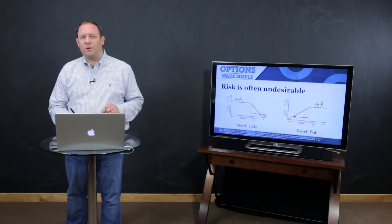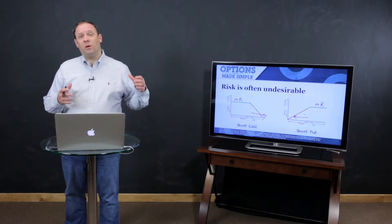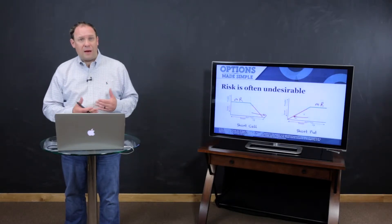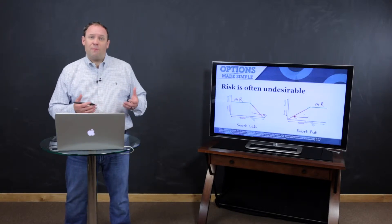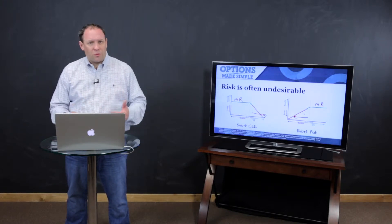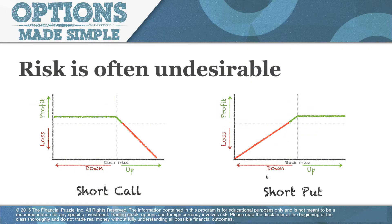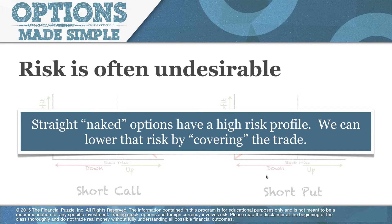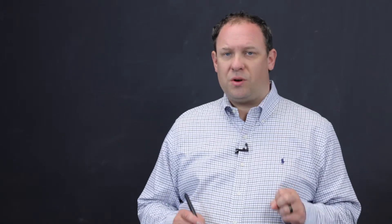Because of this risk profile, shorting options gets a bad name — a lot of people have a bad impression of it. What I want to start showing you is how we can limit that risk profile while still keeping the general benefit of making money in two out of three directions. We'll start building out different strategic uses from there. That high-risk profile from naked options can really get in the way, but we can lower it by covering the trade — and that's what I want to start sharing with you as we get into this set of videos.